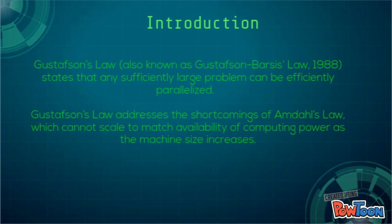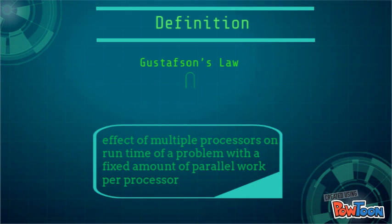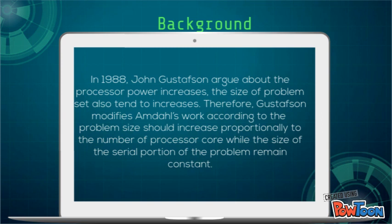The definition of Gustafson's Law is about the effect of multiple processors on the time of a problem with a fixed amount of parallel or pure processor. In 1988, John Gustafson argued that as processor power increases, the size of the problem set also tends to increase. Therefore, Gustafson modifies Amdahl's work according to the idea that problem size should increase proportionally to the number of processors, while the size of the serial portion of the problem remains constant.